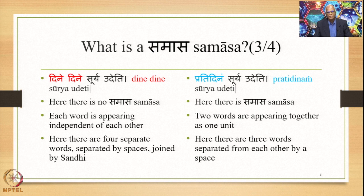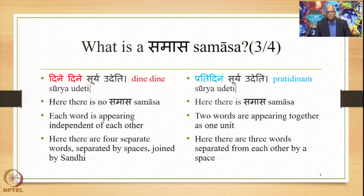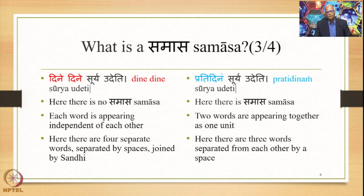On the right-hand side, we see Pratidinam Suryah Udeti — here there is Samasa. Two words appear together as one unit: Prati and Dinam. Overall, there are three words in the sentence, separated by spaces. The same Sandhi also occurs here. So Dine Dine becomes Pratidinam. This is an example of the Avyayibhava Samasa. The previous example, Ramalakshmanao, was that of a Dvandva Samasa.